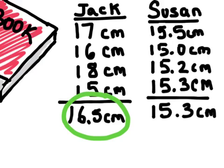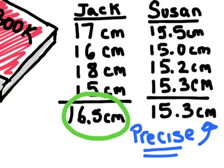Although Jack had the more accurate measurement, his measurements are all over the place — ranging from 15 to 18 centimeters, a 3 centimeter difference. Susan, on the other hand, has measurements that are very close together, with the largest difference being only 0.5 centimeters between 15.5 and 15.0. Although Susan was not accurate, she was very precise. Precision is a measure of how close a series of measurements are to one another, or how exact a measurement is.